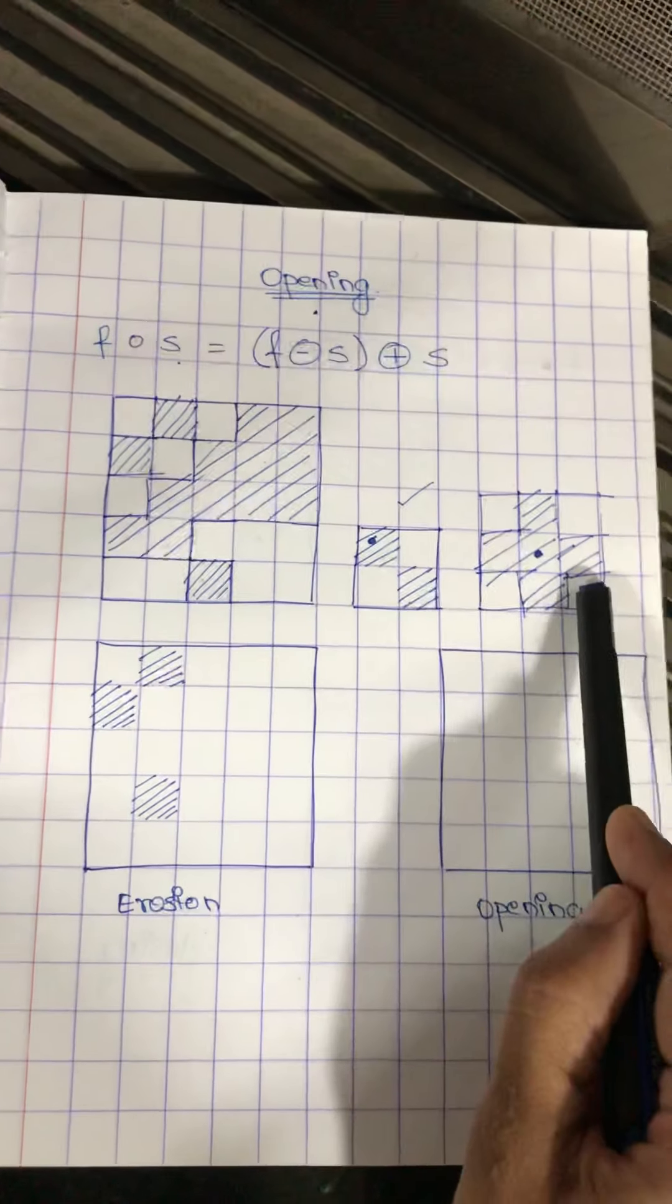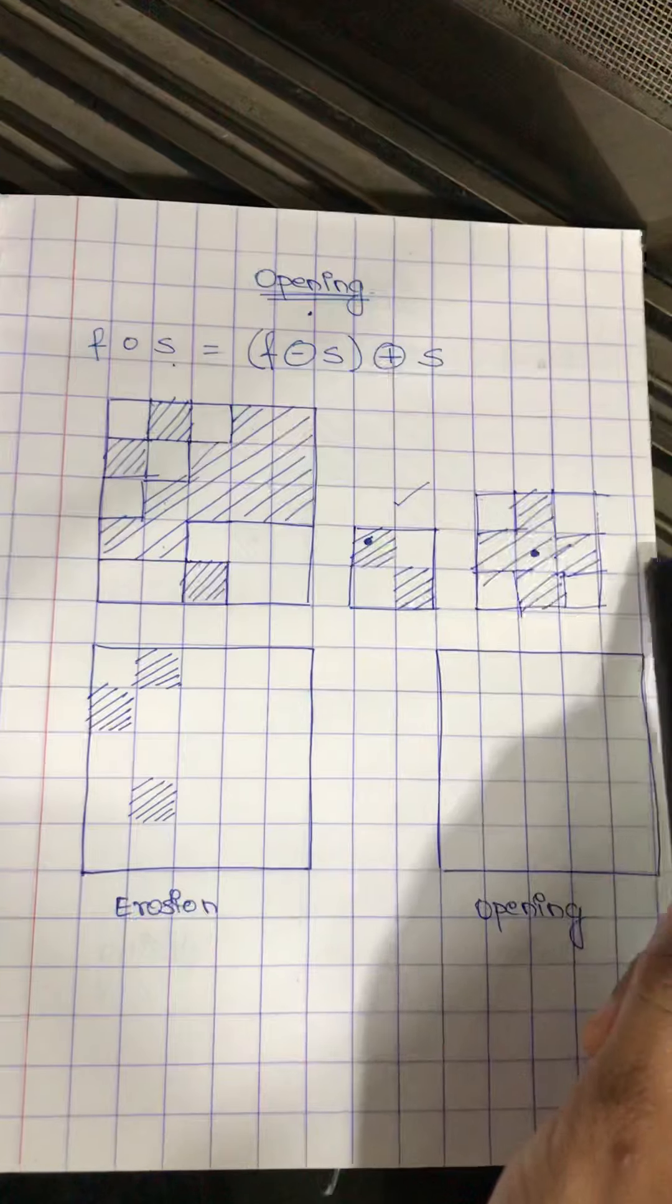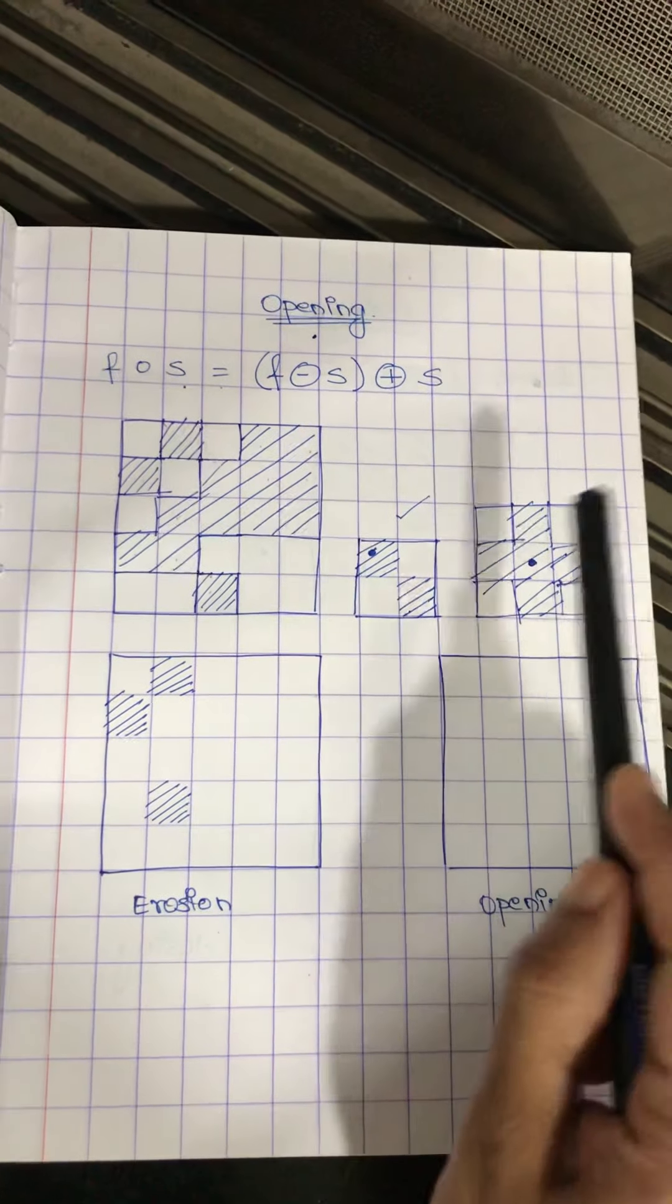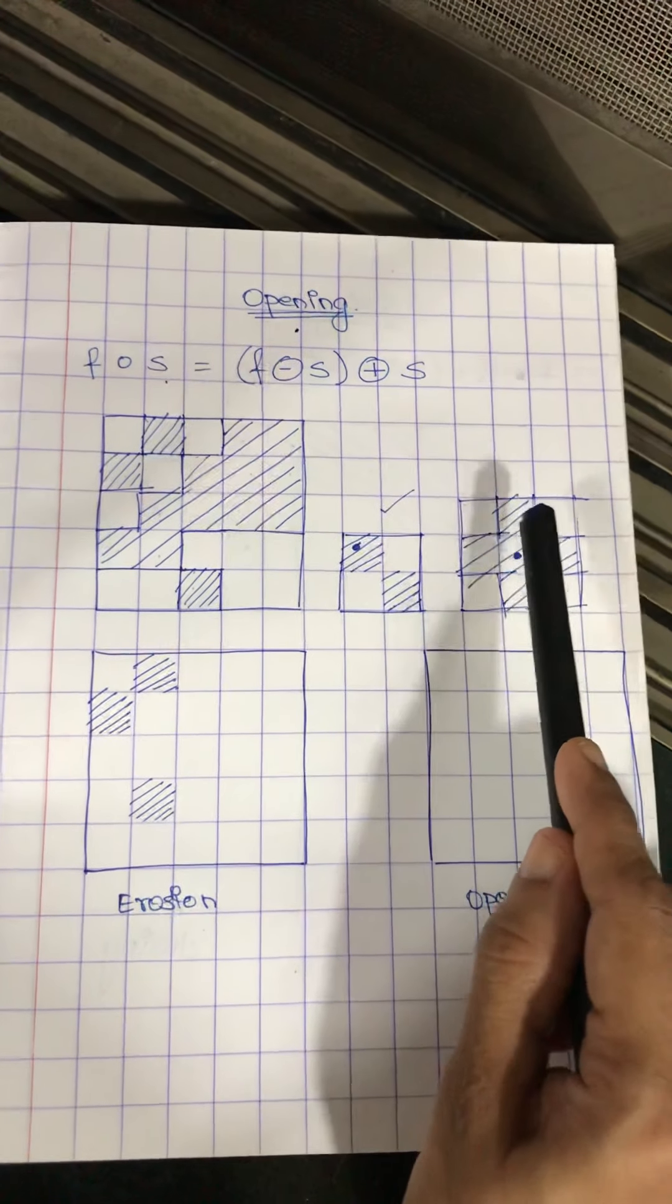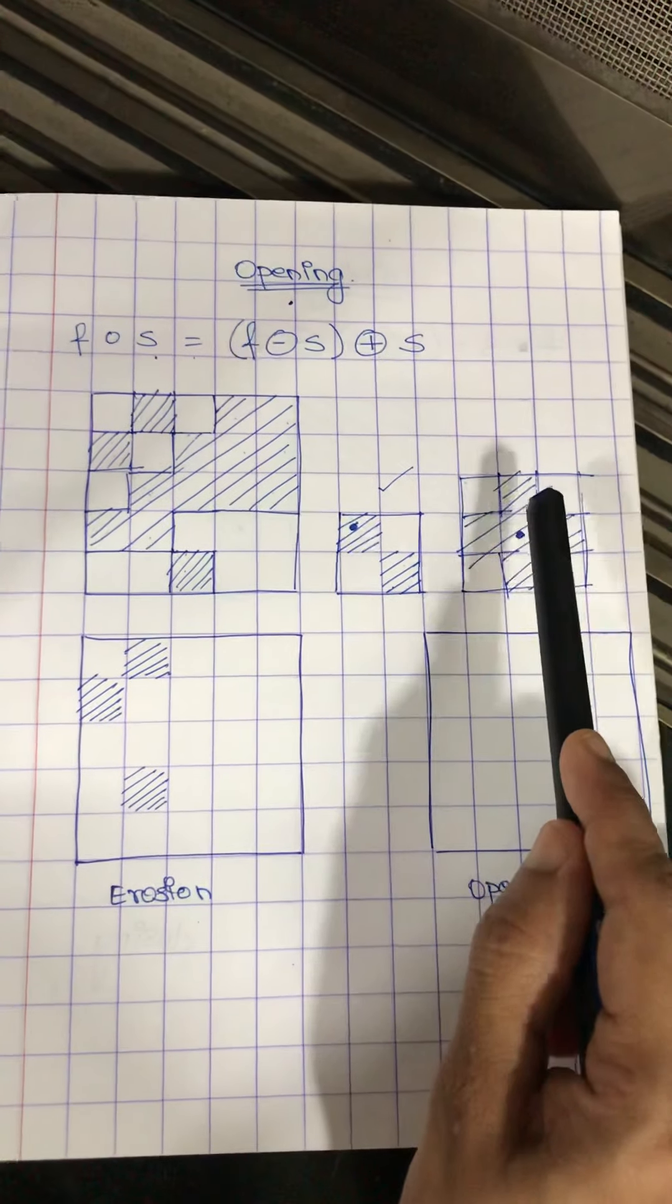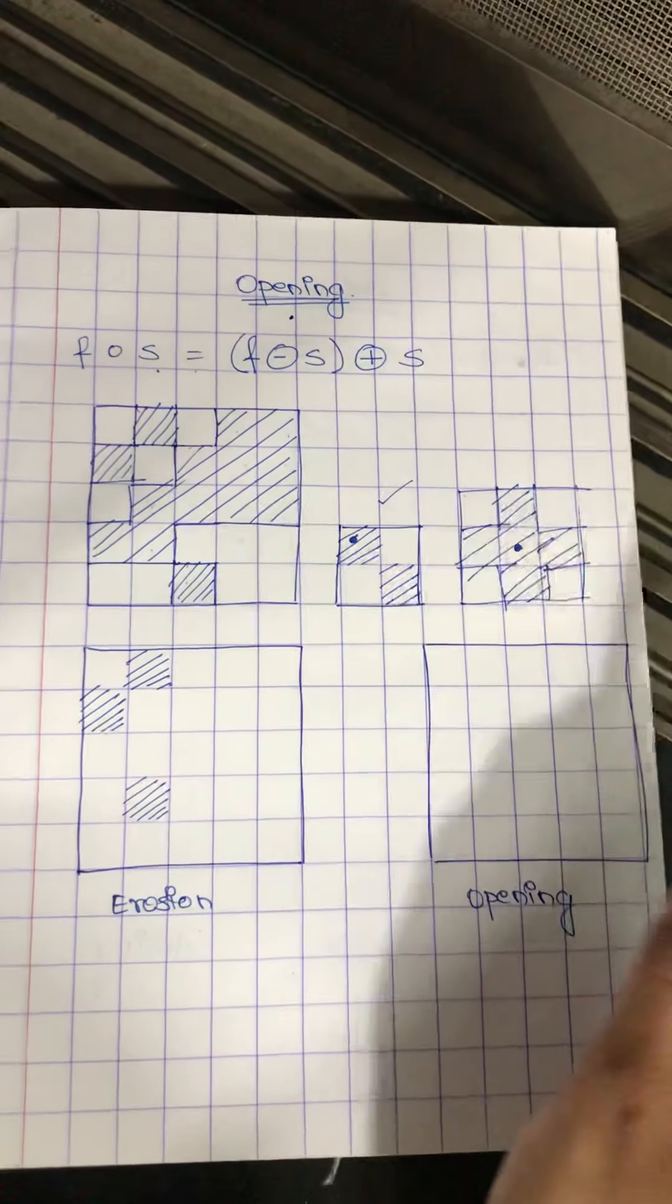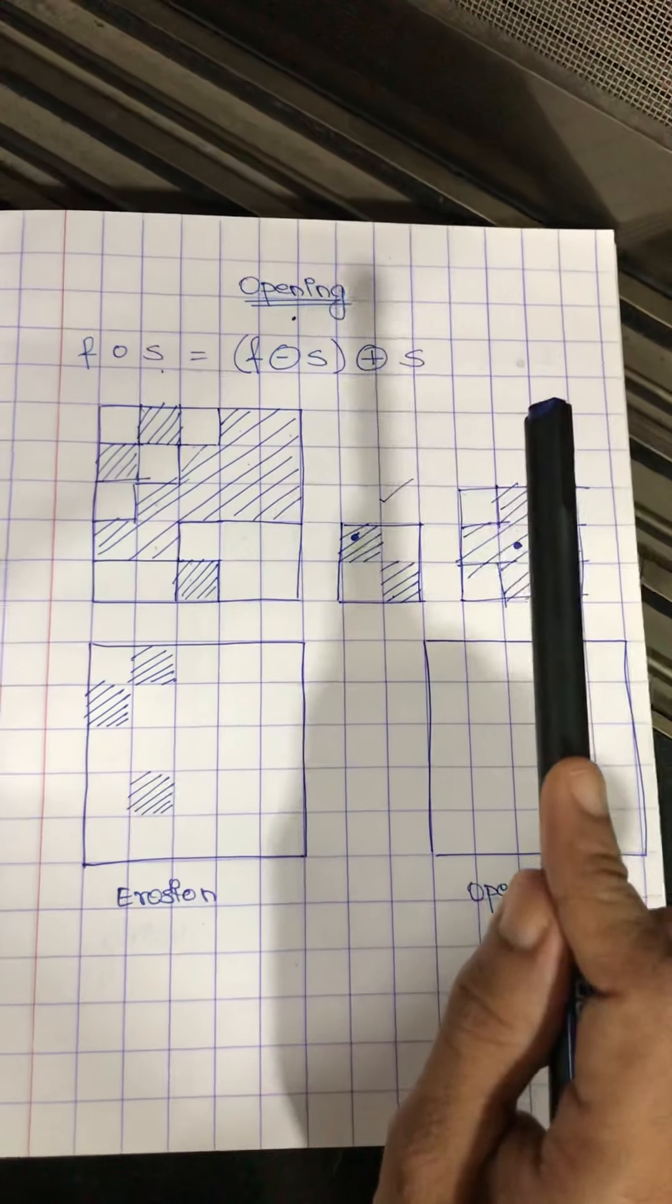We can also have a structuring element which is of 3 x 3 and it can have any shape. Here is one example of a structuring element, that is a plus sign. The origin for 3 x 3 or any odd dimension structuring element may not be specified, since it is implied that the center element is the origin of the mask or of the structuring element.